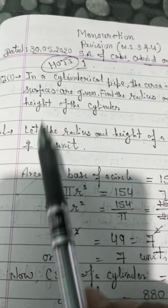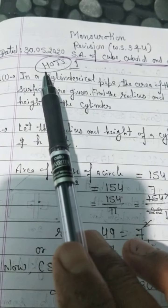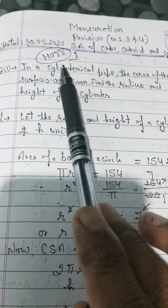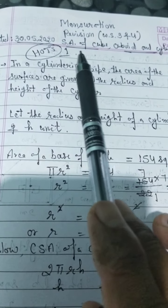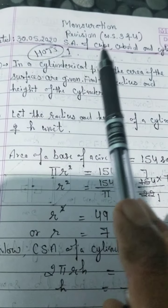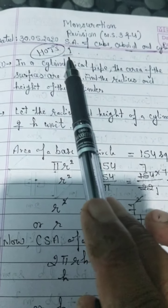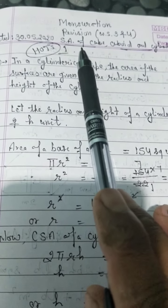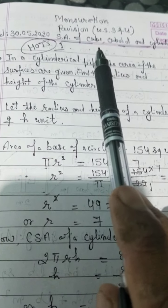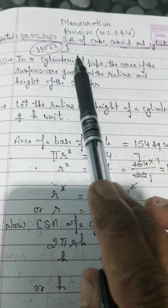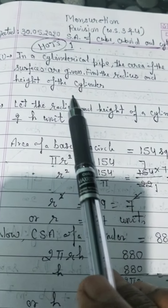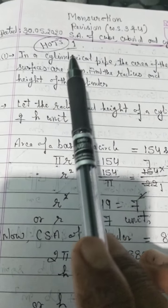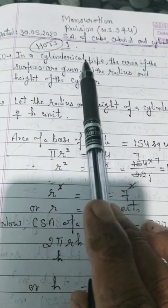Hello, good morning students. Today, dated 30th May, Friday — mensuration revision of worksheets 3 and 4. This Sunday I will take the test of worksheets 1, 2, 3, and 4. Worksheet 1 is area of trapezium, worksheet 2 is area of quadrilateral, worksheet 3 is surface area of cube and cuboid, and worksheet 4 is surface area of cylinders. Yesterday I revised worksheets 1 and 2; today I go for worksheets 3 and 4.